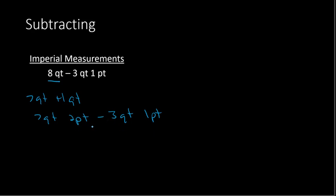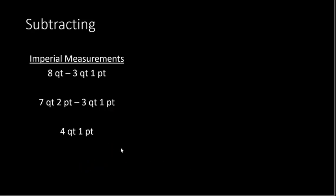Now we have matching units for both. We can subtract the quarts: 7 minus 3 gives 4 quarts. And then we subtract the pints: 2 pints minus 1 pint gives 1 pint. So our answer is 4 quarts, 1 pint.